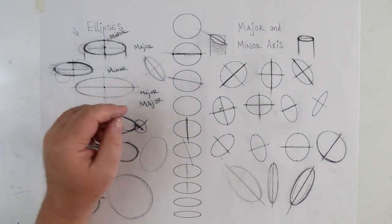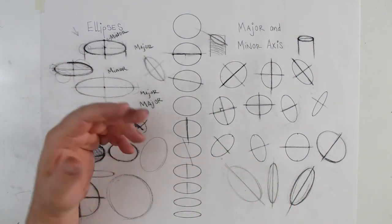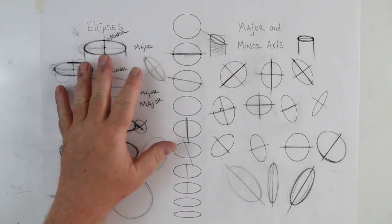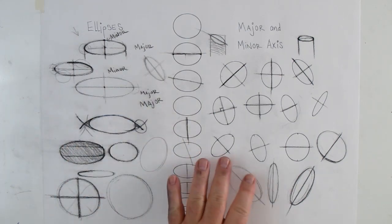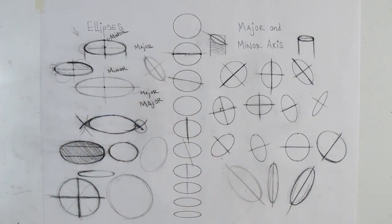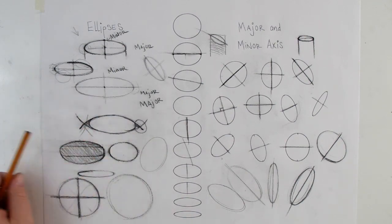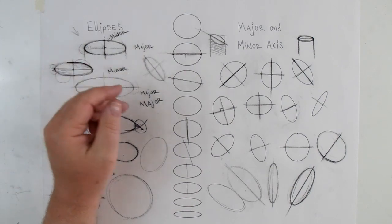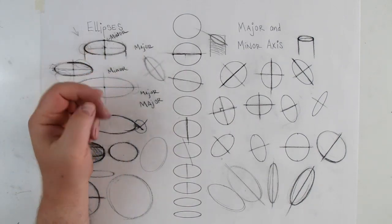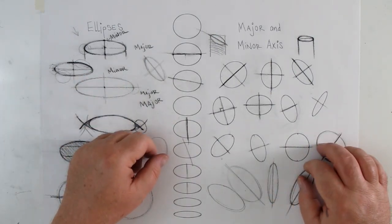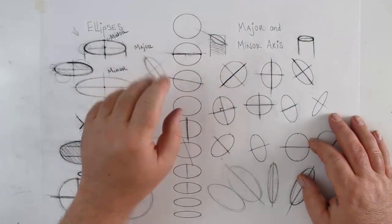Understanding the major and minor axis is keys to the kingdom for drawing circles and ellipses. I encourage you to use it. The more you draw ellipses, the better you'll get — it's that simple: practice, practice, practice. I've drawn thousands, maybe tens of thousands of ellipses, and I can still draw a pretty decent one by hand. Go ahead, give this a shot, enjoy, be more creative, and have yourselves a good day.